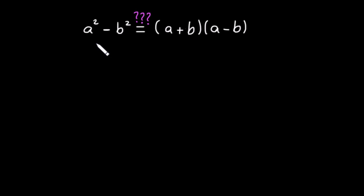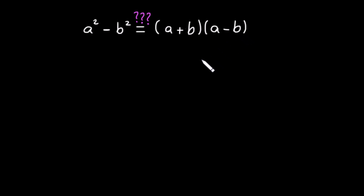In this video we will do an algebraic proof of a squared minus b squared, showing that a squared minus b squared equals a plus b multiplied by a minus b. Before this video we have done a geometrical explanation and derivation of this, so it's interesting to do the algebraic proof as well.